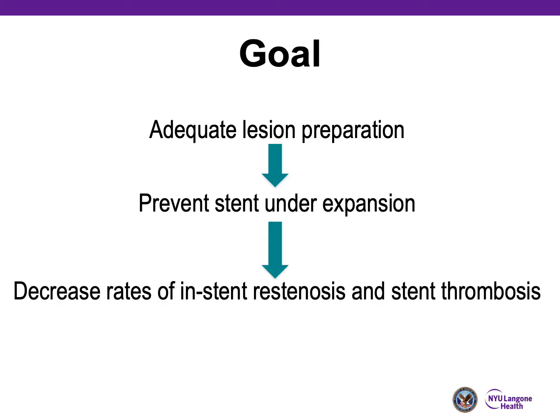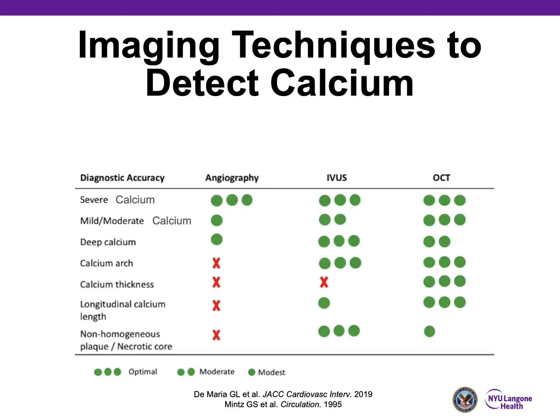The overall goal is adequate lesion preparation to prevent stent under-expansion and thereby decrease the rates of in-stent restenosis and stent thrombosis. This is critical — we want to have a stent that is both well-opposed and well-expanded.